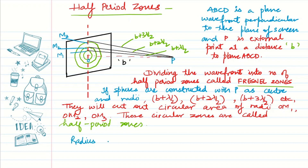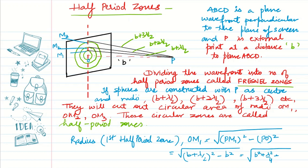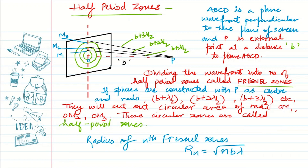We can find the radius of the first half period zone OM1 using the Pythagorean theorem: OM1² = PM1² − PO², where PM1 = b + λ/2. Expanding gives b² + bλ + λ²/4 − b², and neglecting λ²/4, we get OM1 = √(bλ). Similarly, OM2 = √(2bλ) and OM3 = √(3bλ). The generalized radius of the nth Fresnel zone is rn = √(nbλ).